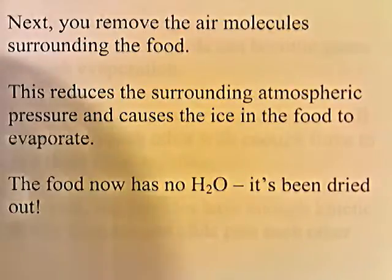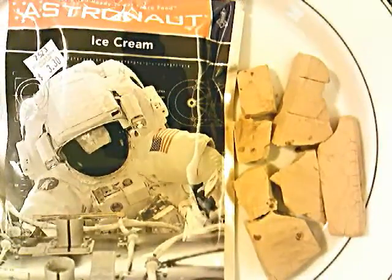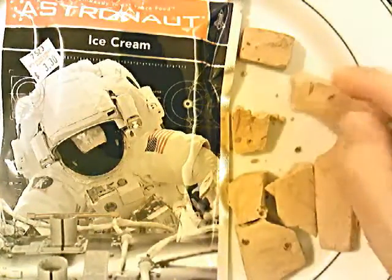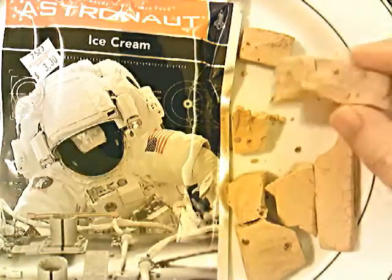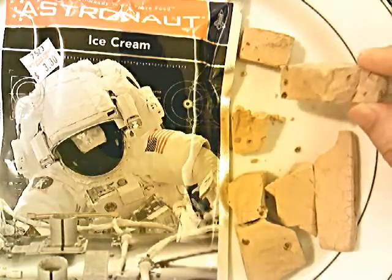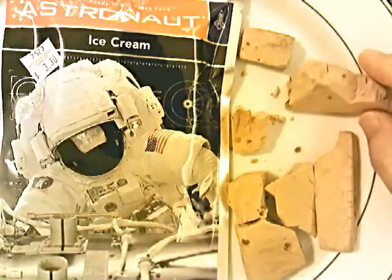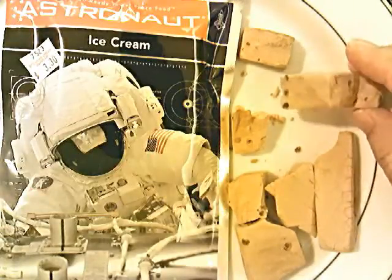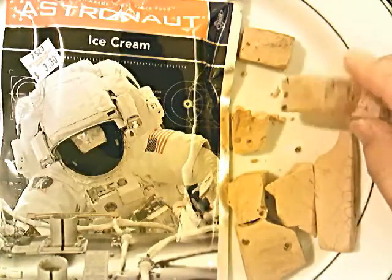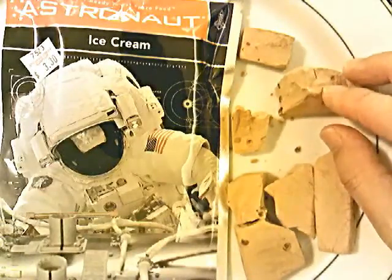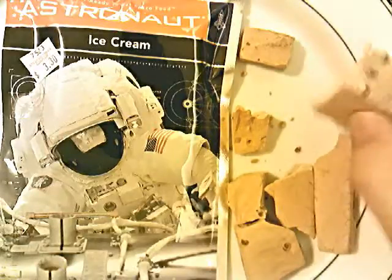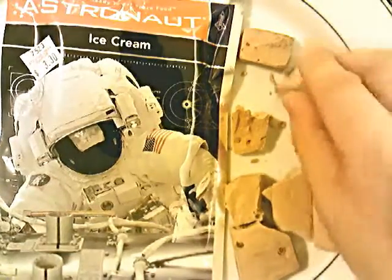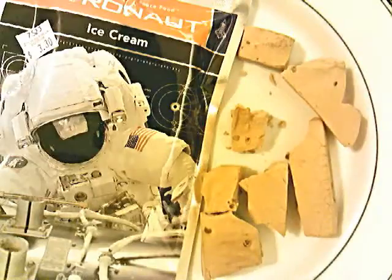Here's an example of freeze-dried food — astronaut ice cream. This used to be ice cream, but it was frozen to solidify all the water, then placed in a vacuum, removing all surrounding atmospheric pressure, which causes the ice inside to evaporate and all the water to be removed. The result is kind of like a hard, dry, chalky cookie.